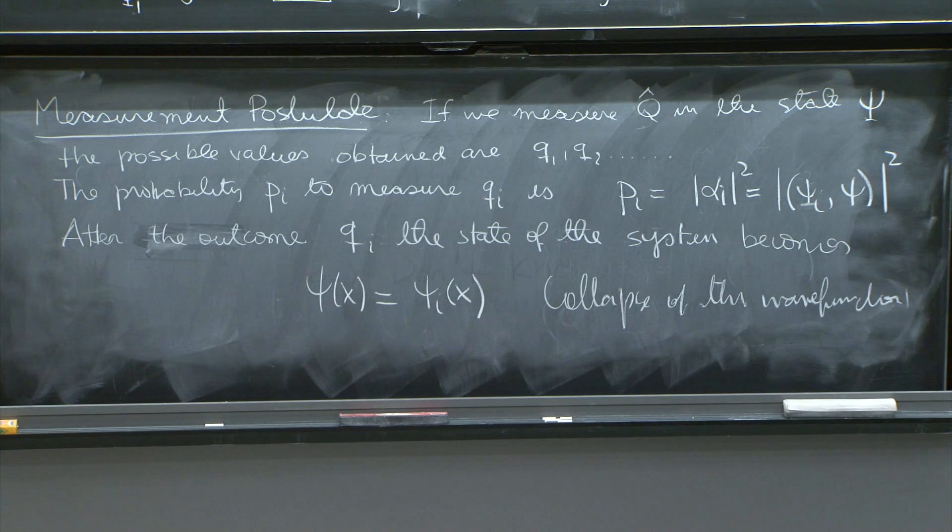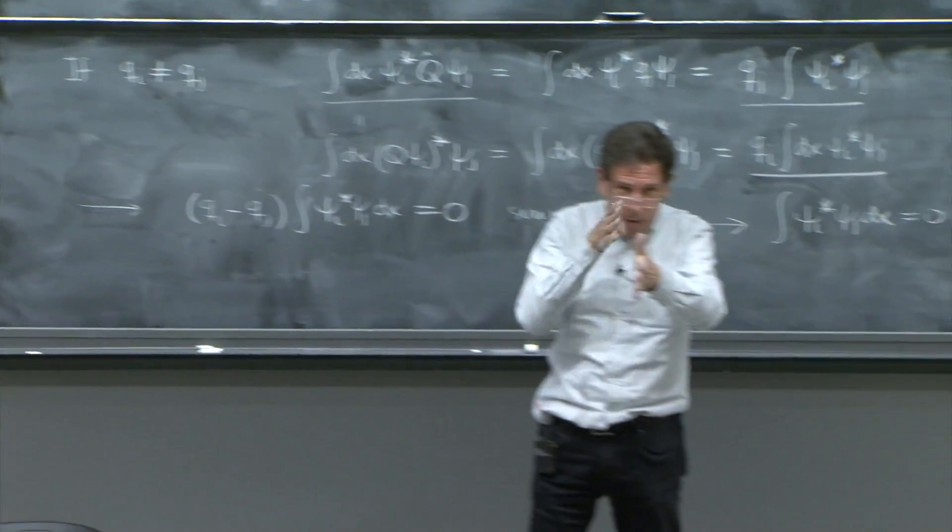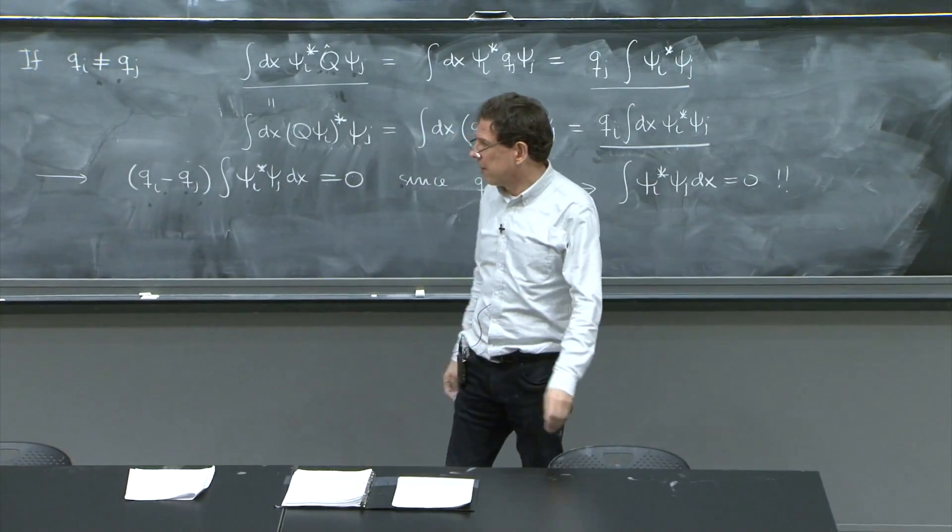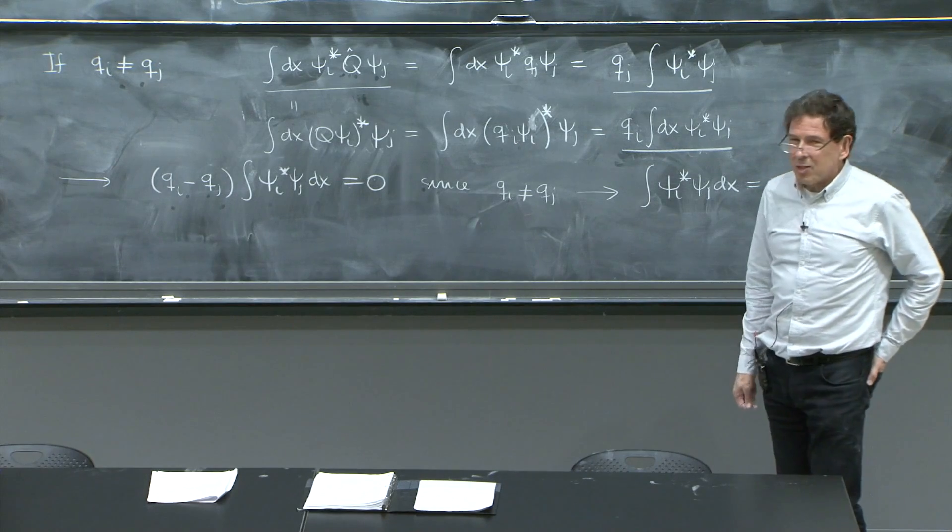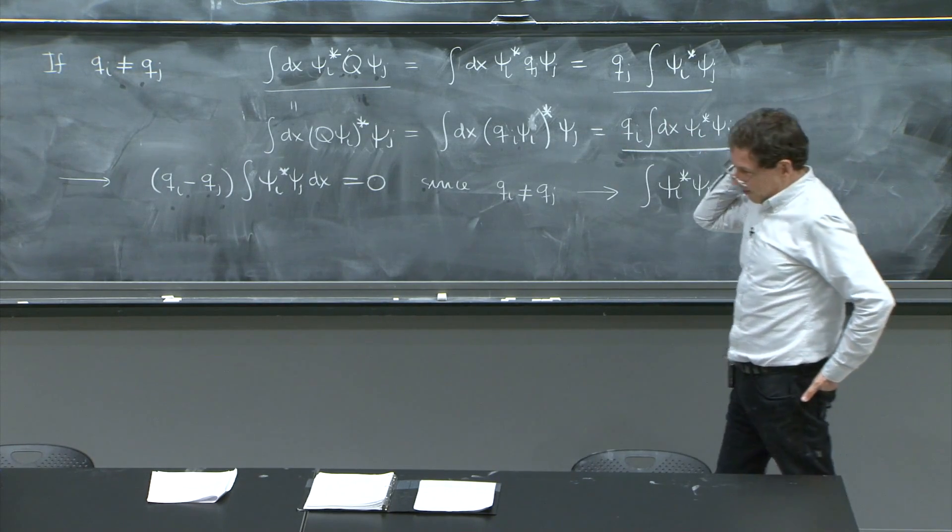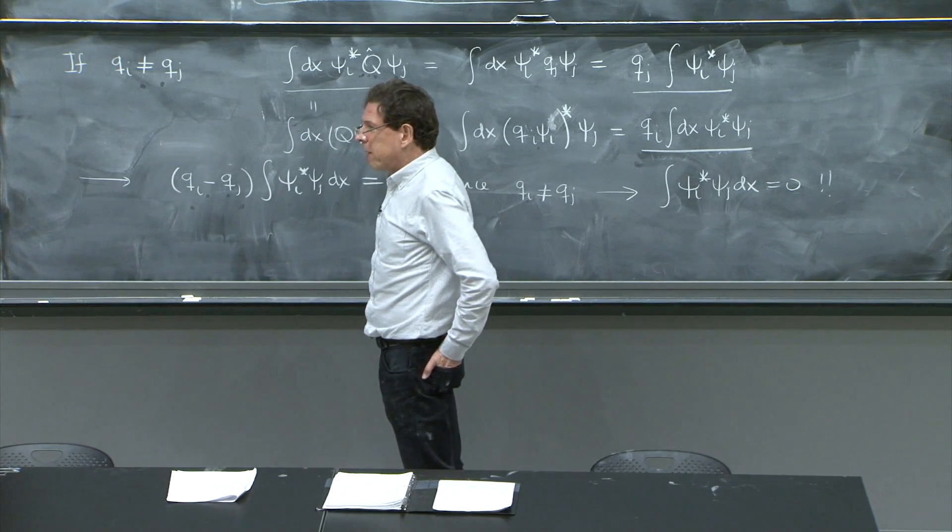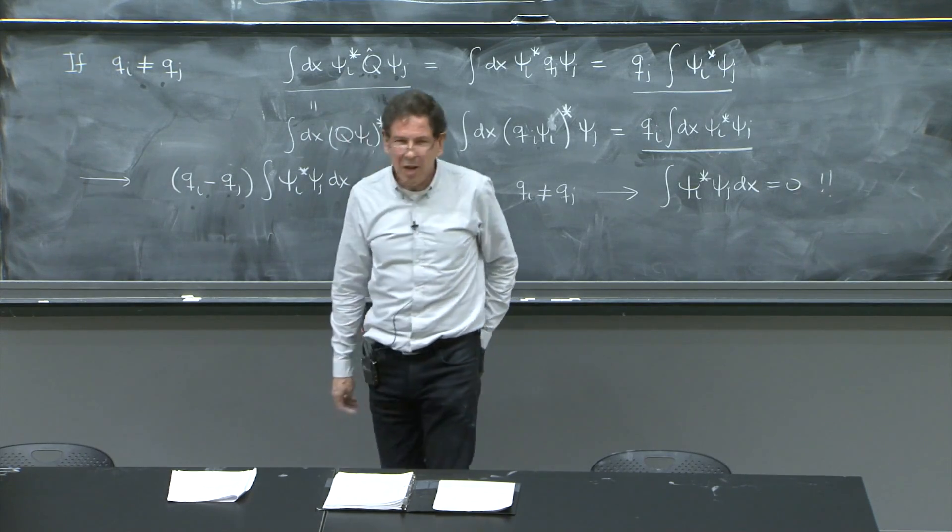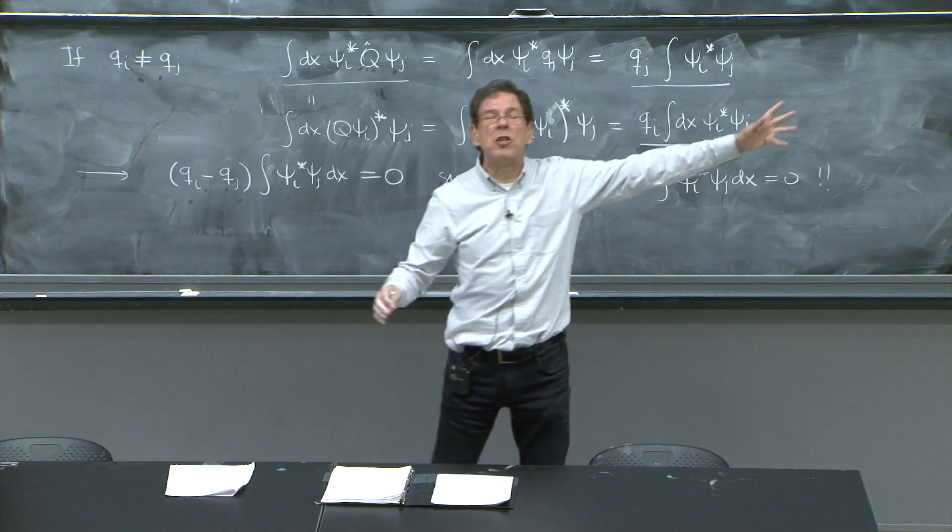And it also means that after you've done the measurement and you did obtain value of qi, you stay with psi i. If you measure it again, you would keep obtaining qi and qi. So why, you see, why did it all become possible?